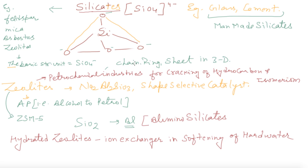They can form the chain, ring or sheet in three-dimensional fashion. Man-made silicates are glass and cement. And zeolite is a silicate which is used in the petrochemical industry for cracking of hydrocarbon and isomerization.